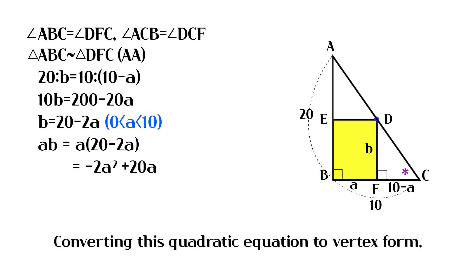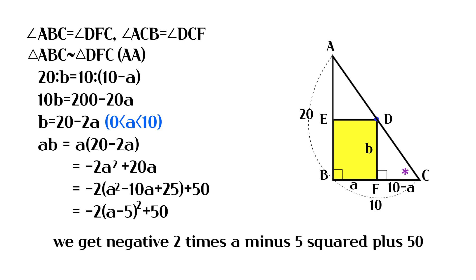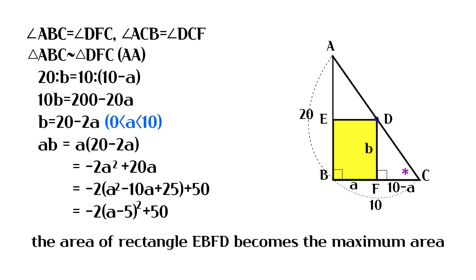Converting this quadratic equation to vertex form, we get negative 2 times (a minus 5) squared plus 50. So when a is 5, the area of rectangle EBFD becomes the maximum area.